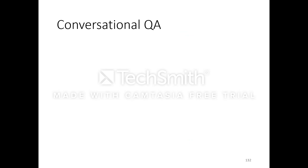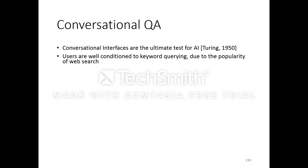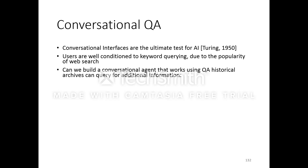Another area could be conversational QA. Conversational interfaces were regarded as the ultimate test for artificial intelligence, going back to Turing's work in 1950. Users are well conditioned to keyboard querying due to the popularity of web search over the last 20-odd years since the emergence of Yahoo, Ask, and Google in the late 90s. Can we build a conversational agent that works using QA historical archives to engage with the user in a meaningful way?